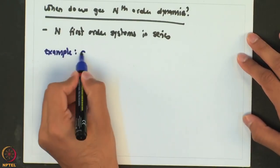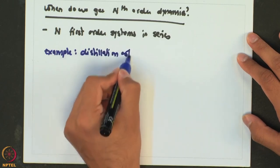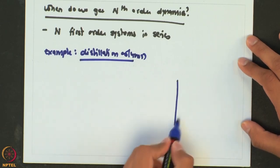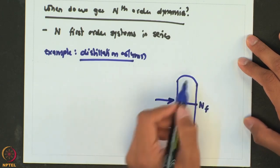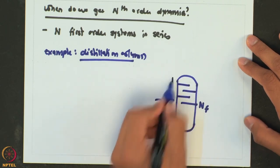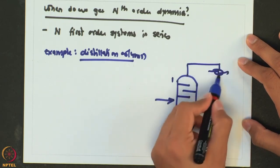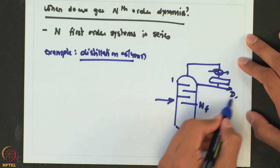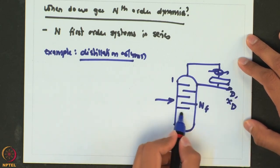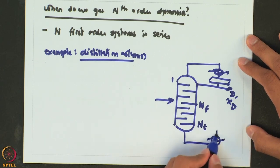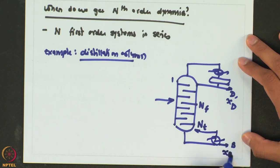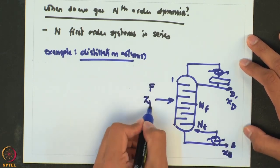Let us take an example of a distillation column. We have this distillation column where the feed comes in at some stage nf. The stages are numbered from the top: tray 1, a condenser, a reflux drum, and the product comes out with purity xd. In the stripping section we have further stages, the total number being nt, and then we have a reboiler with product going out at flow rate b and composition xb. The feed has flow rate f and composition zf.